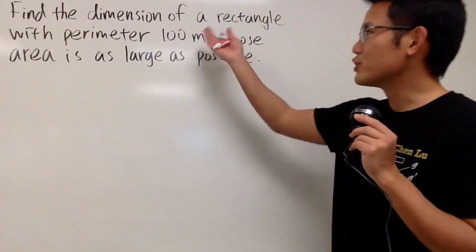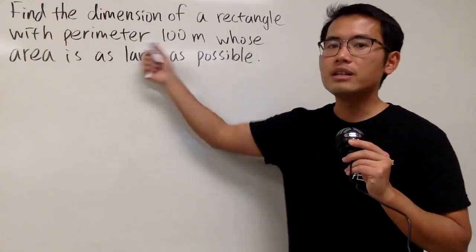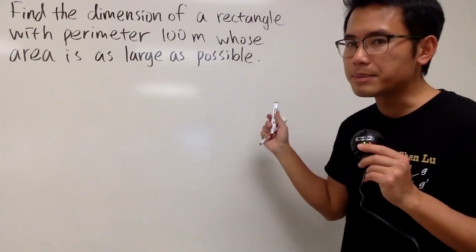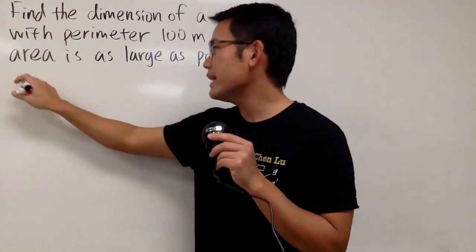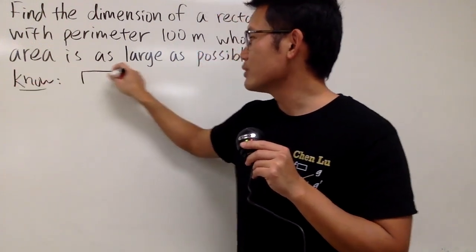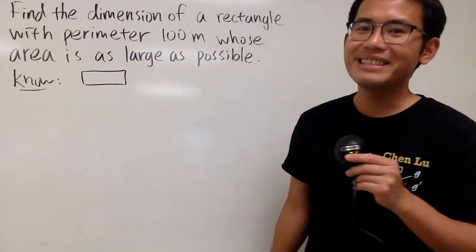Okay, so for this question, we are going to find the dimension of a rectangle so that its perimeter is 100 meters, but we want the area to be as large as possible. So here we go. Let's go ahead and put down what we know first. Of course, we have a rectangle, so let's draw a picture to help us see it.